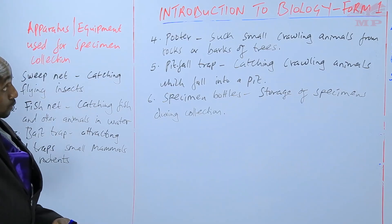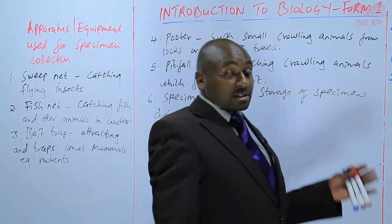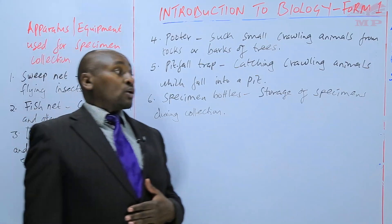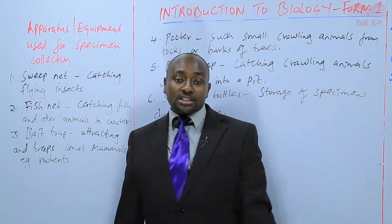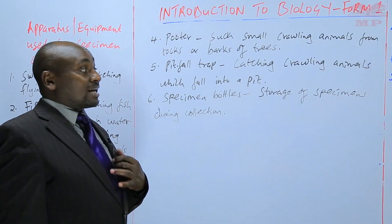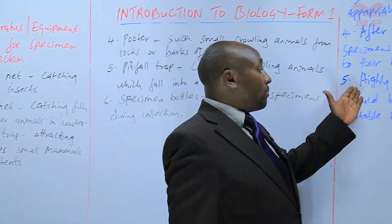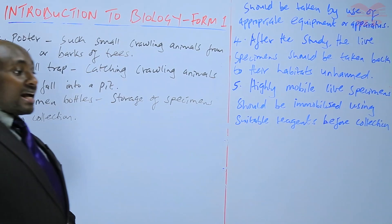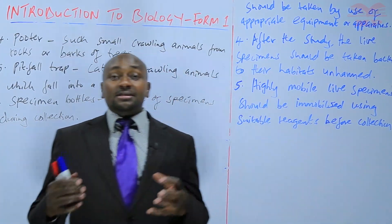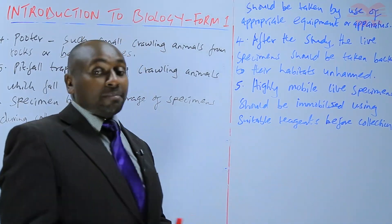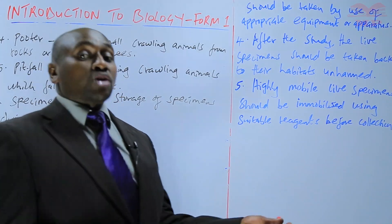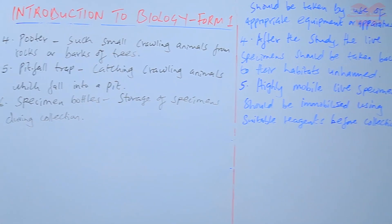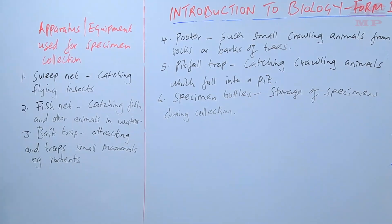Today we have learned about the precautions to take during specimen collection: we should not injure the specimen; we should not destroy their habitats; we should only collect the number that we need to avoid wastage. For those specimens that are highly mobile, they should be immobilized by use of suitable reagents before collection. Finally, after completing the study, the live specimens should be taken back to their habitats to avoid destruction of the ecosystem.